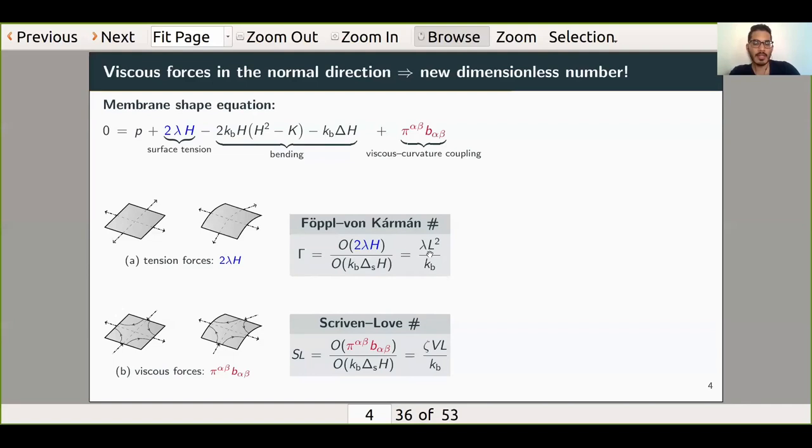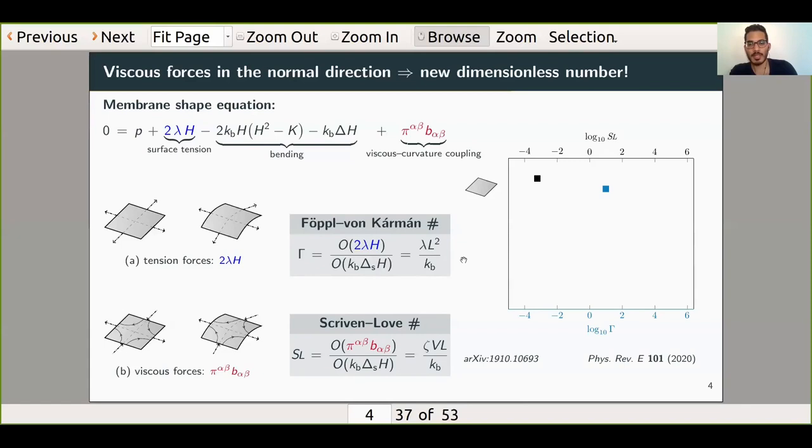Now a natural question that arises is: do these forces matter? Should we care about them in biological systems? To answer that question, we considered previous experimental results and calculated the magnitude of these dimensionless numbers in various experiments. I'll tell you how to read this graph. Essentially, each symbol—so here the square—corresponds to a single experiment. The black square is the Scriven-Love number, and the blue square is the Föppl-von Kármán number. When the symbols are to the right of zero, it means those forces are significant. To the left of zero, it means those forces are not significant. Each symbol is a different experiment. So here I have one experiment, and now I'm about to show you two more.